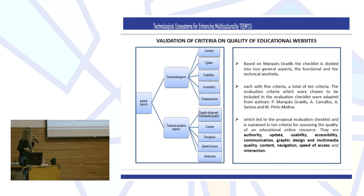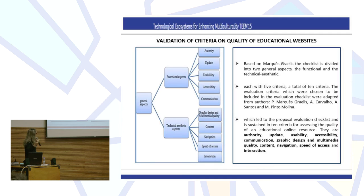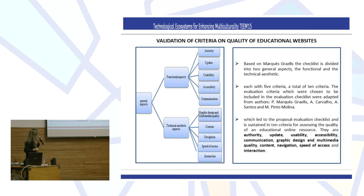But we are proposing to evaluate information for secondary and primary websites. This is our checklist — the structure of our criteria. The general aspects are based on Marco Grails: functional aspects and technical aspects. We divide into five criteria for each one of the general aspects, a total of ten criteria. The evaluation criteria chosen for the checklist were adapted from the authors: Marco Grace, Mourinho Carvalho, Ana Santos, and M. Pinto Molina.